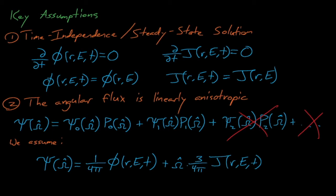This approximation is also known as the P1 approximation. The P1 approximation can fail stupendously in some systems, but in general it's a pretty reasonable assumption for thermal reactors, such as light water reactors.